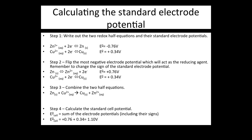Step 3: combine the two half equations. We do not need to multiply any of the half equations as the electrons are already cancelled out, with two on both sides. Combining the equations gives Zn(s) + Cu²⁺ → Cu(s) + Zn²⁺. Step 4: calculate the standard cell potential. It is the sum of the electrode potentials including their signs: 0.76 + 0.34 = 1.10 volts.